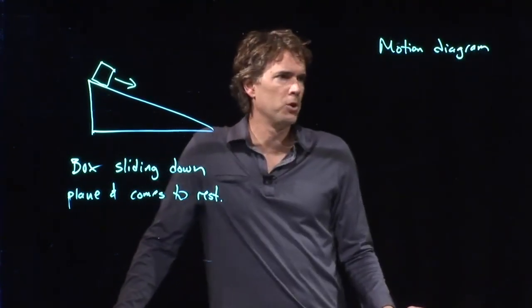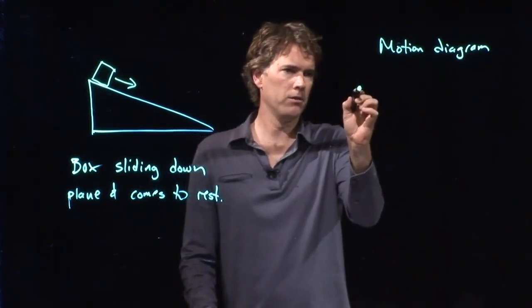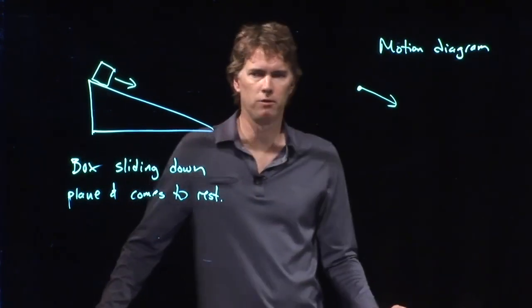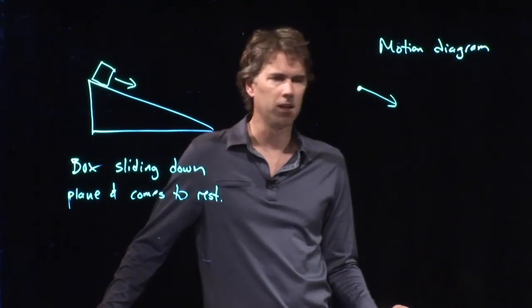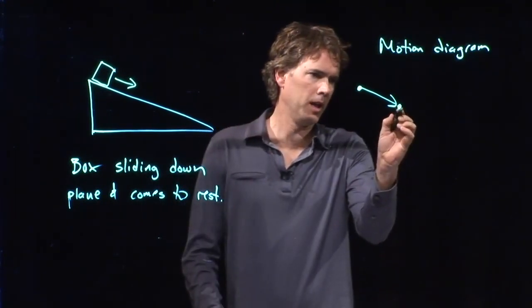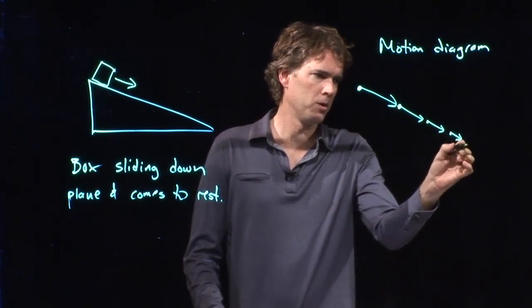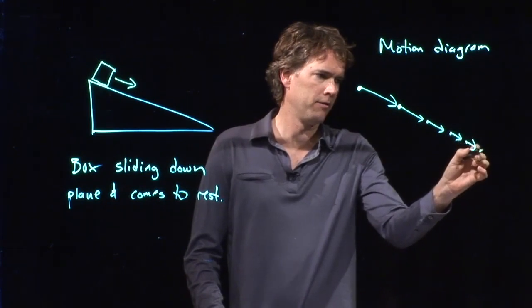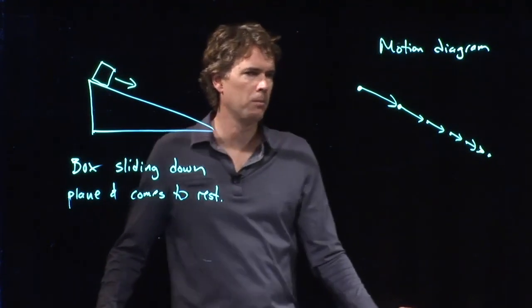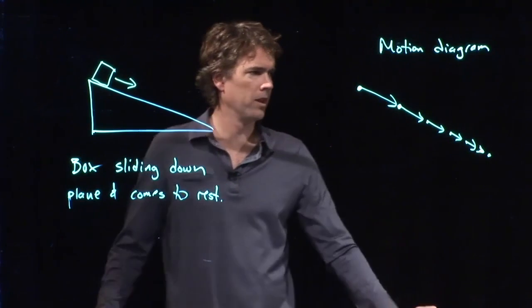So for those motion diagrams, one way to draw it is arrows that indicate the velocity. So if that is my initial velocity and this thing is coming to rest, then I want to draw it again and again but the arrows are going to get shorter and shorter and shorter and finally it comes to a rest. And that's what my motion diagram looks like. Those indicate velocity.